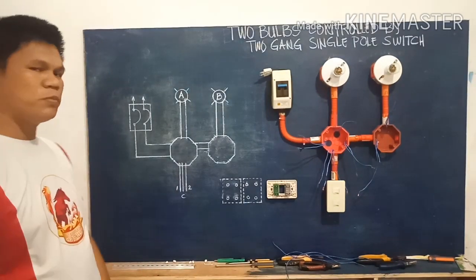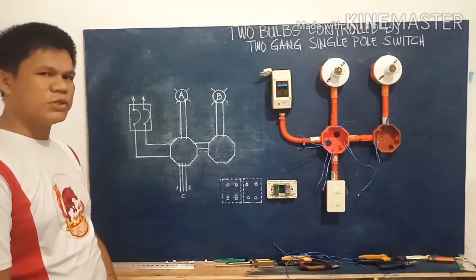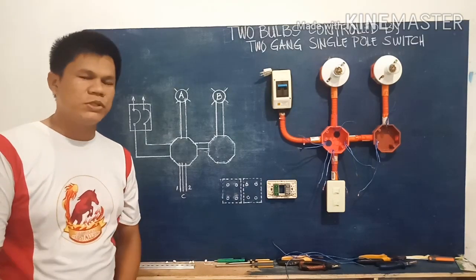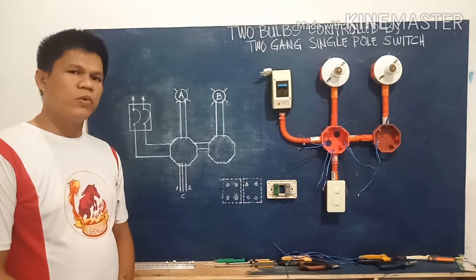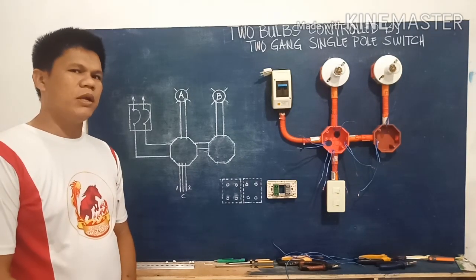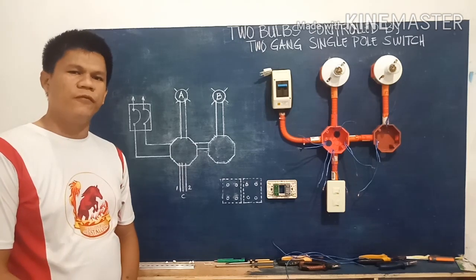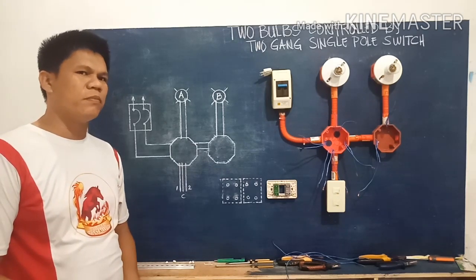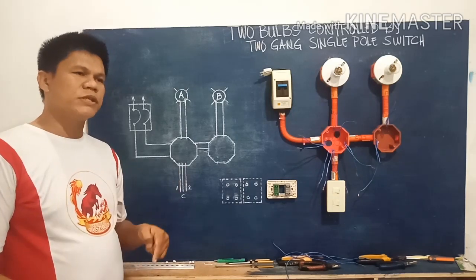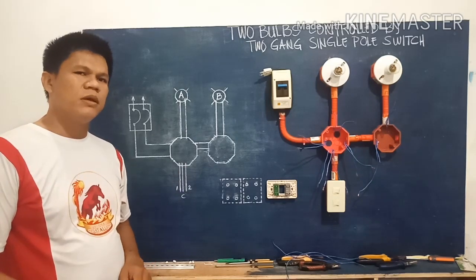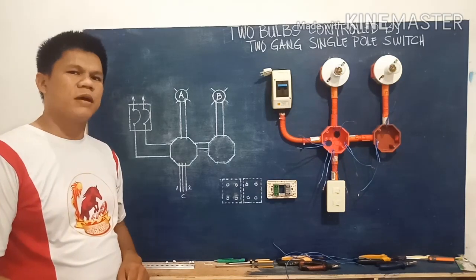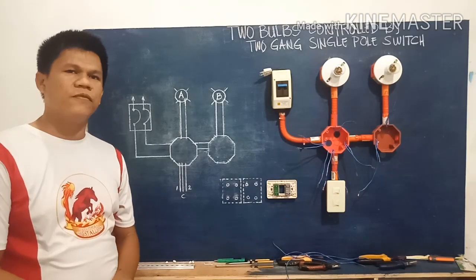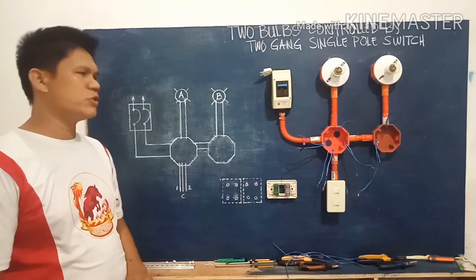Before we proceed on our discussions about the two bulbs controlled by two-gang single pole switches, we need to review our discussions regarding the three cycles of current flow in the circuit. In the first cycle we have from source to load, the second cycle from load to switch, and the third cycle is coming from the switch going back to the source line.